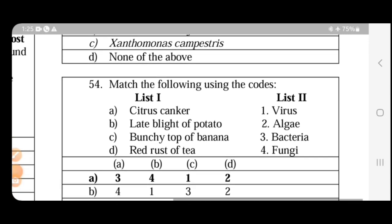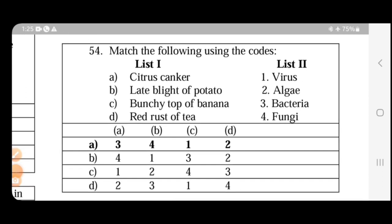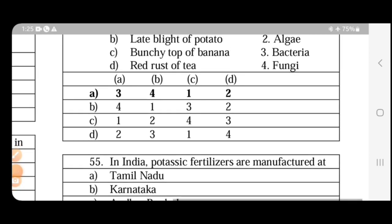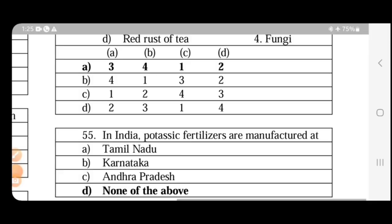Match the following using the codes. Citrus canker is a bacterial disease. Late blight of potato is a fungal disease. Bunchy top of banana is caused by Banana bunchy top virus, so it is a viral disease. Red rust of tea is an algal disease.